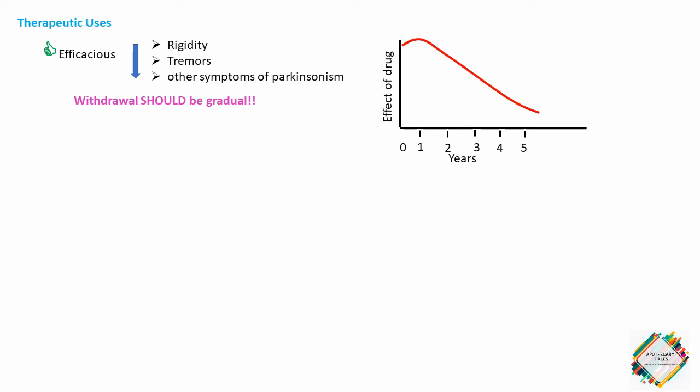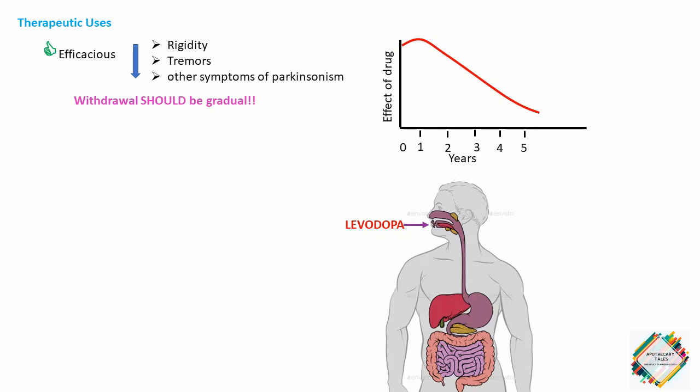Regarding its pharmacokinetics, the drug is absorbed rapidly from the small intestine when empty of food. Levodopa has an extremely short half-life which causes fluctuations in plasma concentration. This may produce fluctuations in motor response which generally correlate with the plasma concentration of levodopa, or perhaps give rise to the more troublesome on-and-off phenomenon in which motor fluctuations are not related to plasma levels in a simple way.